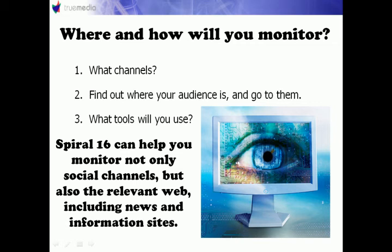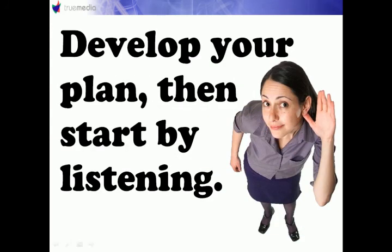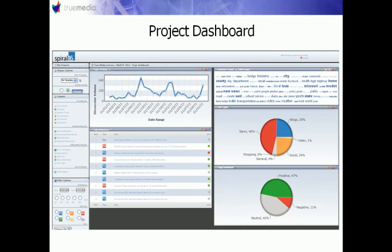That's where Spiral 16 comes in. It can help you monitor not only social channels but also the relevant web, including news and information sites. It's a comprehensive data gathering tool that monitors digital content based on a series of key terms of your choosing. Once you've developed your plan you can start listening, and Spiral 16's proprietary influence algorithm assigns influence to the most important pieces of data and sorts by sentiment, site type, and volume by day so that you can find the most important conversations to monitor.